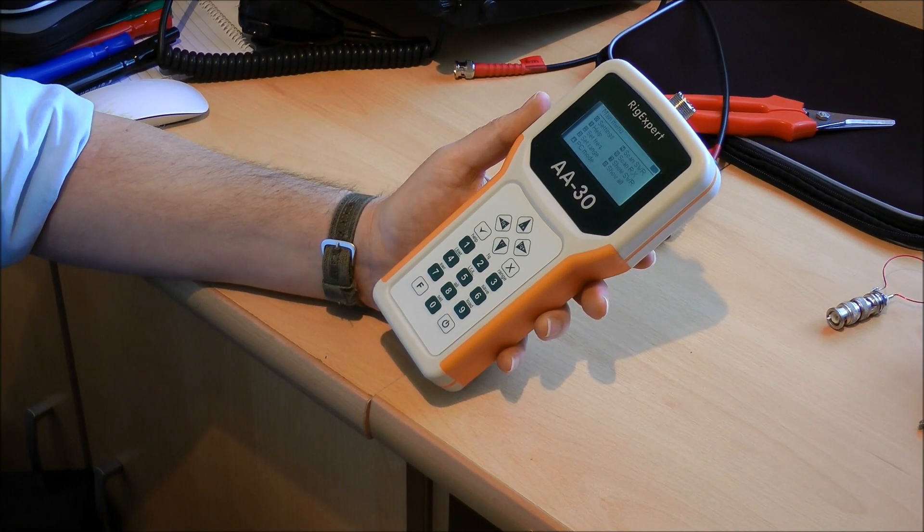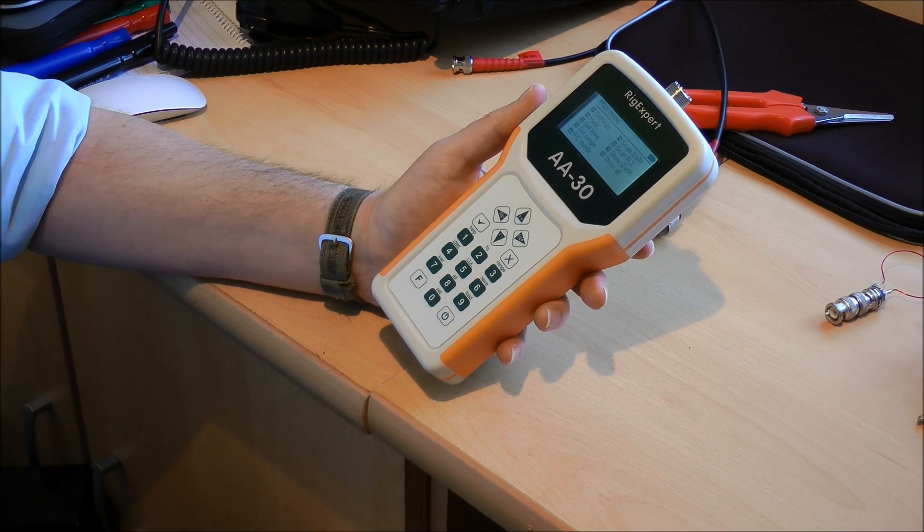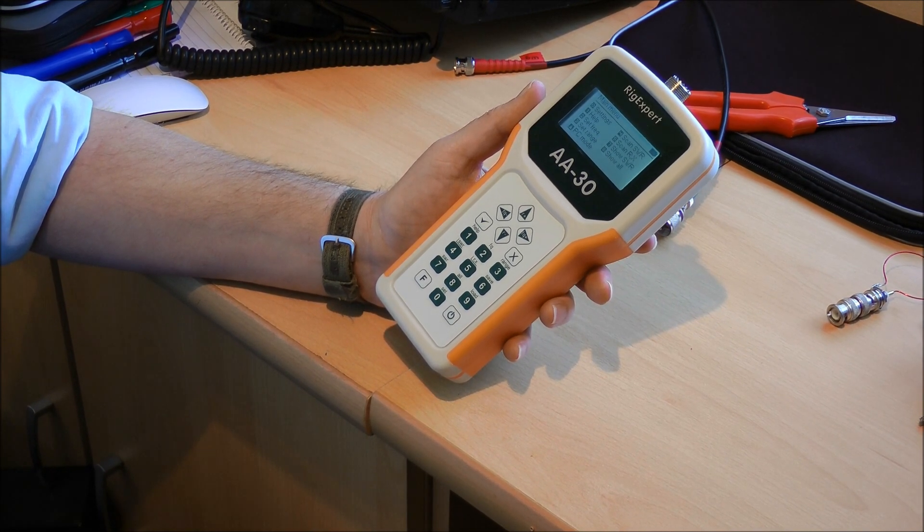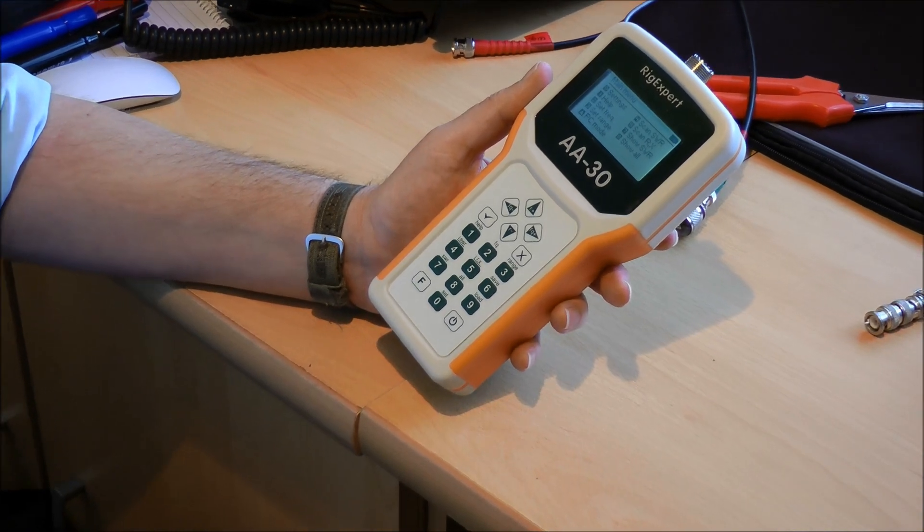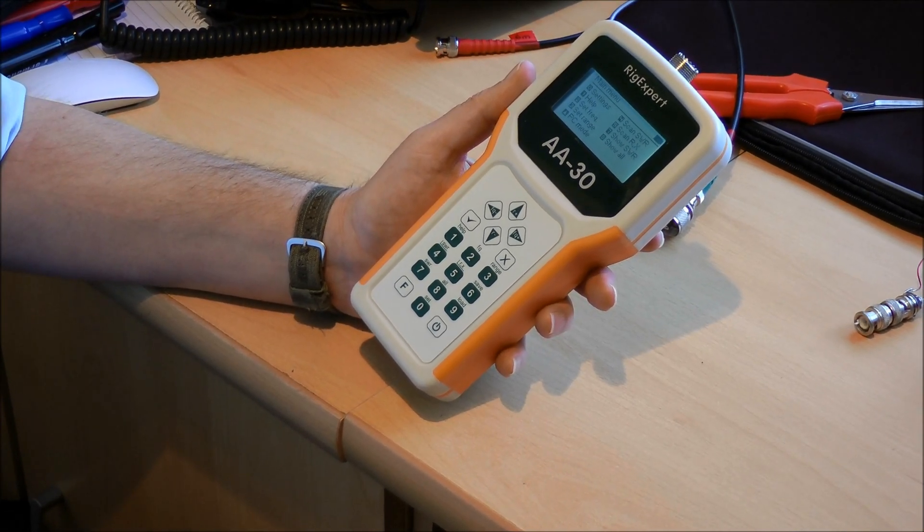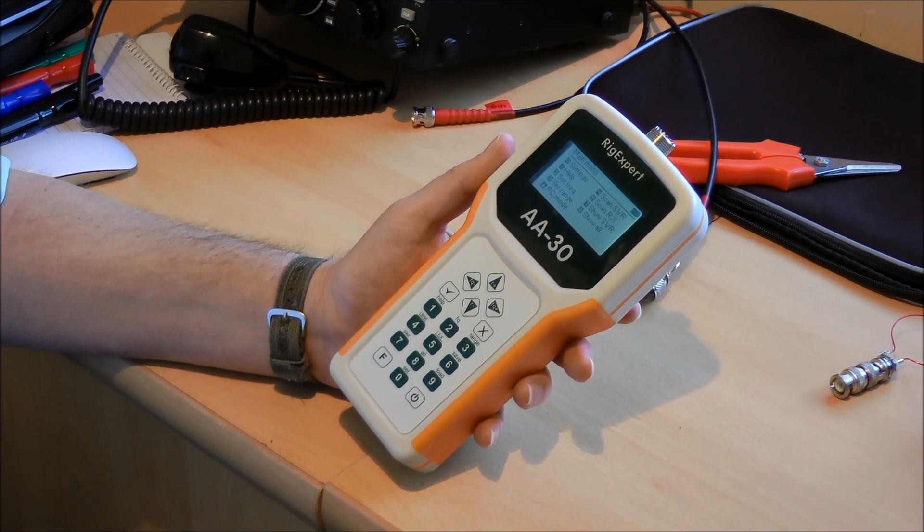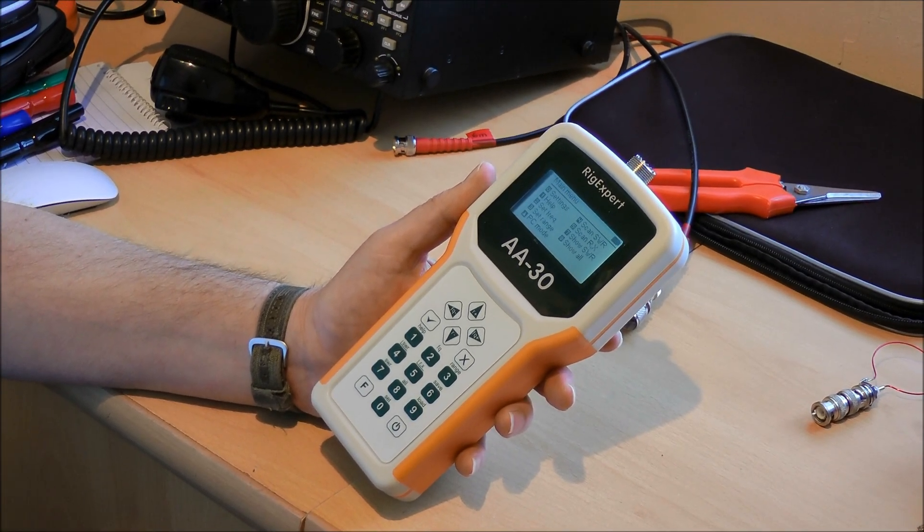Hi, this is GW4OKT on behalf of the Chester and District Amateur Radio Society UK. I want to talk briefly about the Rig Expert AA30, the vanilla version of the antenna analyzers from Rig Expert which covers 100 kHz up to about 30 MHz.